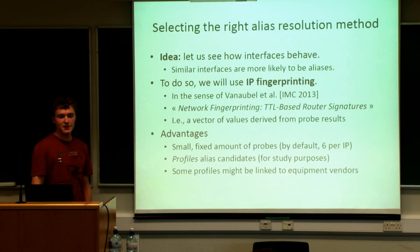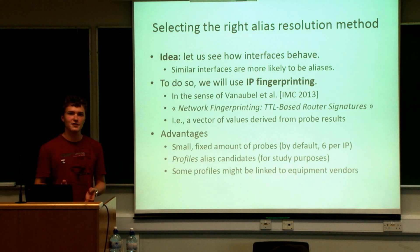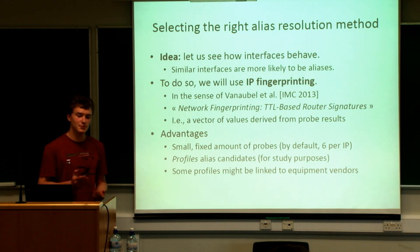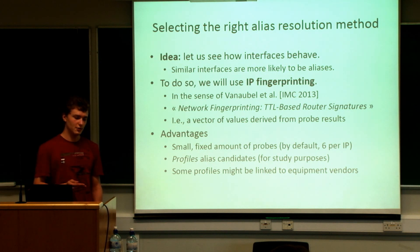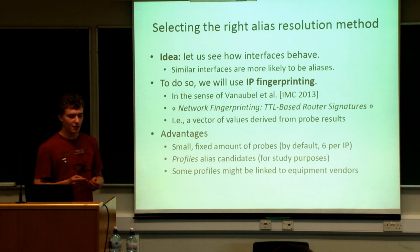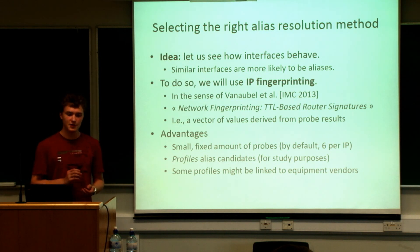The next step consists in selecting the right alias resolution method to alias these interfaces together. The main idea is to first see how these interfaces behave, because if you have similar interfaces with similar behavior, they are more likely to be aliases — similar behavior represents the fact that these IPs might be from the same equipment vendor. To do so, we extended upon the work of my colleague Heath Van Nobel, who worked on 'Network Fingerprinting: TTL-based Router Signatures,' presented at IMC 2013. He discussed how we could fingerprint router interfaces based on initial TTL values, and the possibility that these fingerprints might correspond to particular brands of routers.